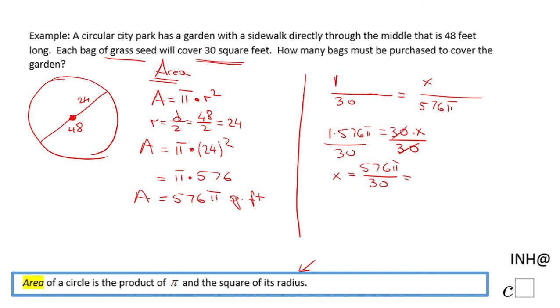I end up with an X of 60.31. Remember, this X stands for the number of bags that needs to be bought in order to cover this garden. The answer we'll round up: we need 61 bags in order to cover this circular garden.